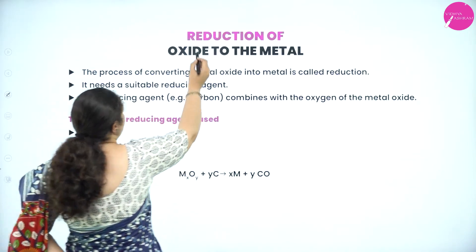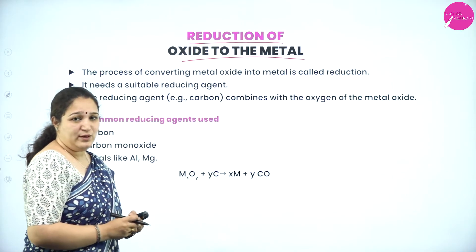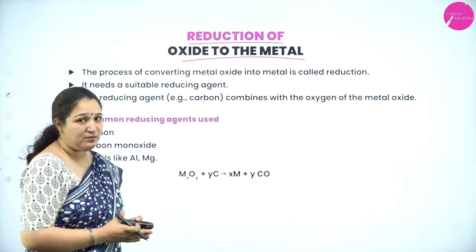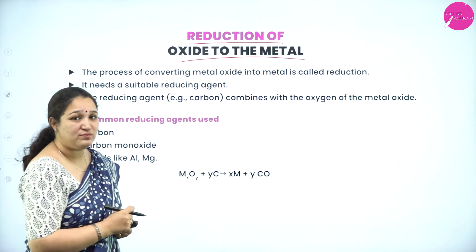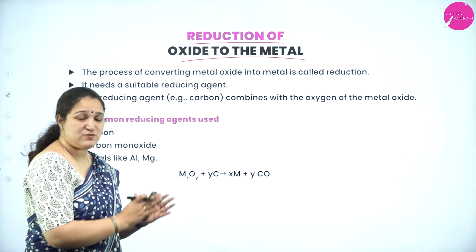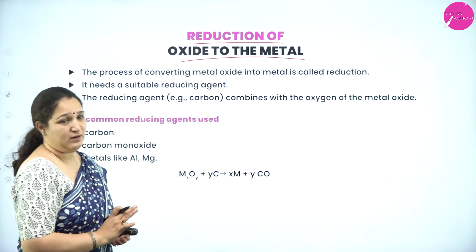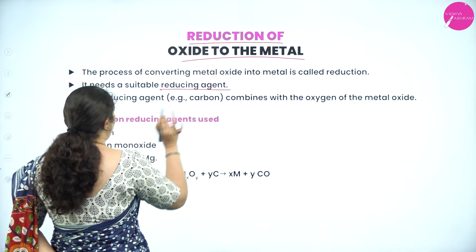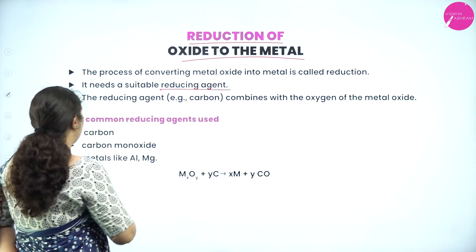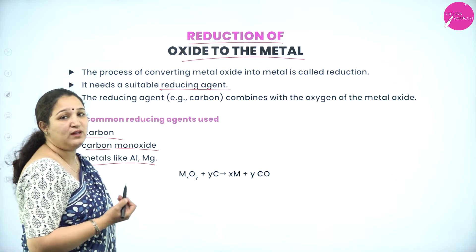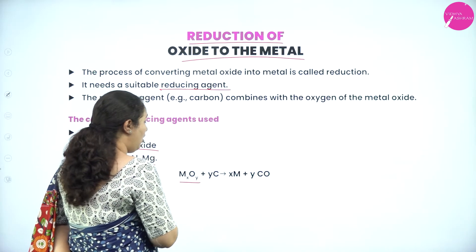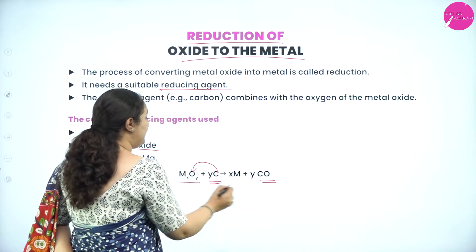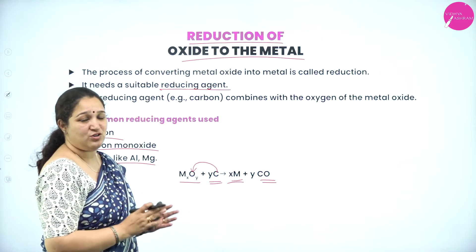Next is the reduction of the oxide to the metal. The metal oxide we have — if we remove the oxygen, we get the metal, and this removal of oxygen is called reduction. The process of converting metal oxide into metal requires a suitable reducing agent, which can be carbon, carbon monoxide, or metals like aluminium or magnesium. When metal oxide is treated with carbon, the carbon takes away the oxygen to form CO or CO₂, and the metal is left behind.